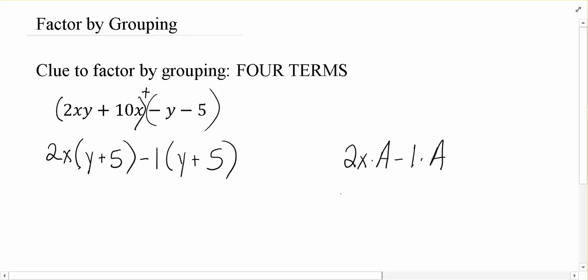To say, hey, they both have an a in them. The first term, I'd be left with a 2x. The second term, I'd be left with negative 1. That's easy. That's a piece of cake.